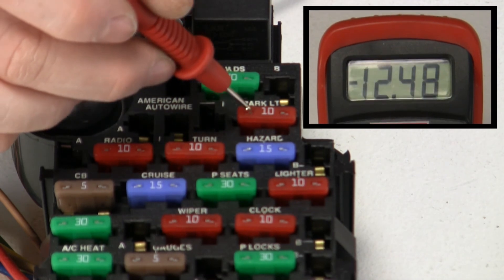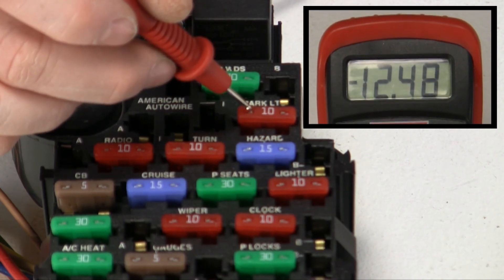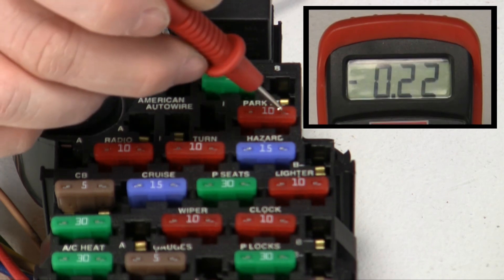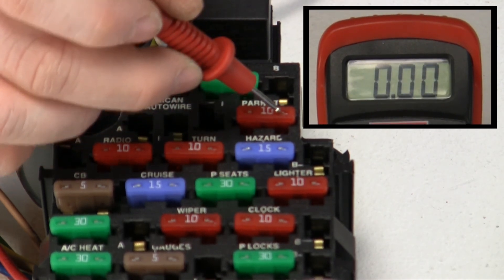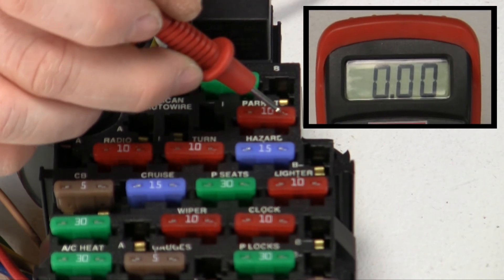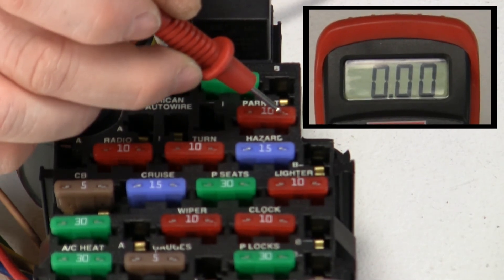Go to the Parkland fuse. Again, 12.5 volts on the input side and we get all zeros coming on the output side. Zeros tells us that there is no power going through this fuse and that the fuse is blown.